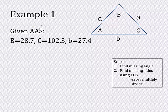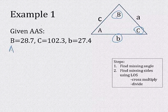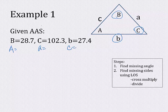Example one: given two angles and a side outside those angles. So we're given angle B, angle C, and little b. That little b is not between those two angles, but that doesn't really matter — you still have two angles and a side. We need to solve for big A, find little a, and find little c — all the missing parts of the triangle.